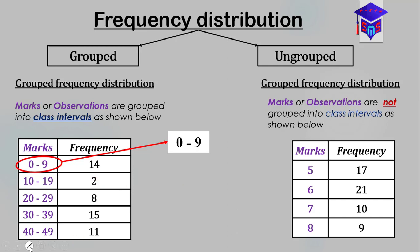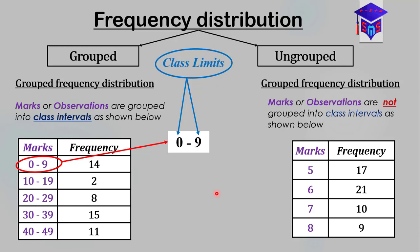The class interval gives us limits — two numbers that define a boundary beyond which we can't go. If a person scores more than 9, they wouldn't fall in the 0 to 9 interval. Similarly, if a person scores more than 19 or less than 10, they wouldn't be recorded in the 10 to 19 category. These numbers are called class limits.